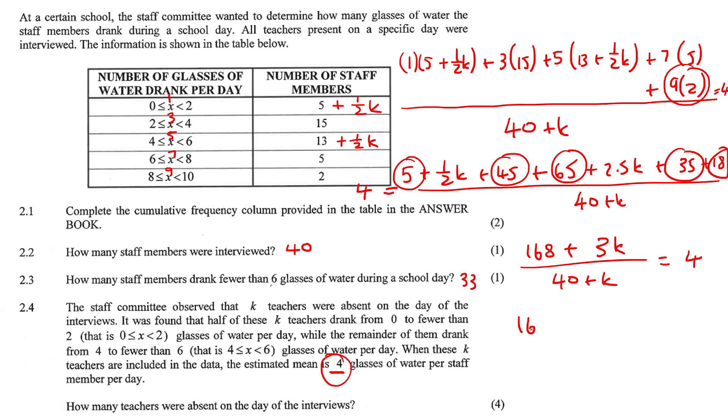I'm going to cross multiply now. So we end up with that. I'm then going to multiply the 4 in. Okay, now I'm going to take the K over to the other side. So it'll end up being 4 minus 3, which is just K. And then I'm going to take the 160 over to the left. And so K must be 8.